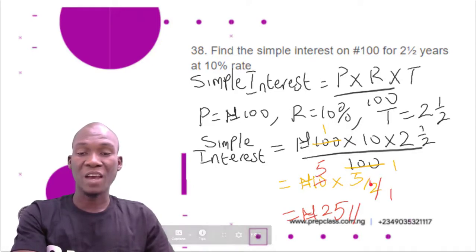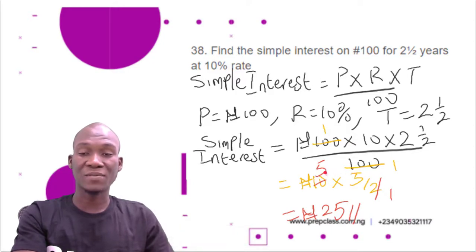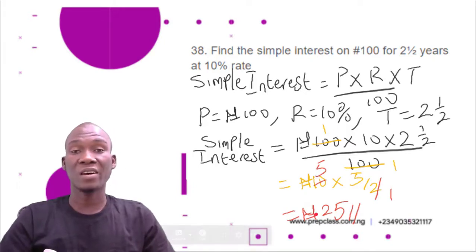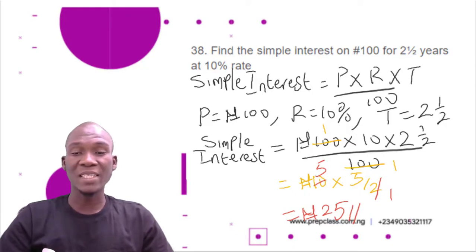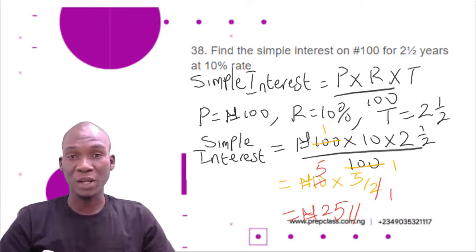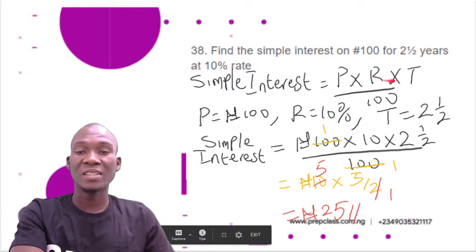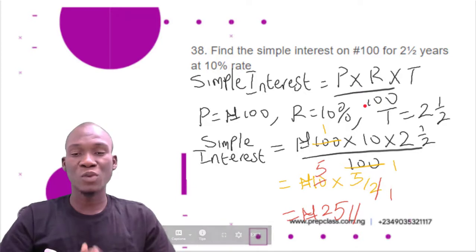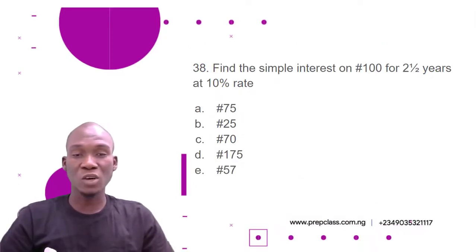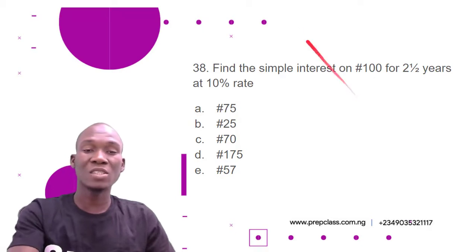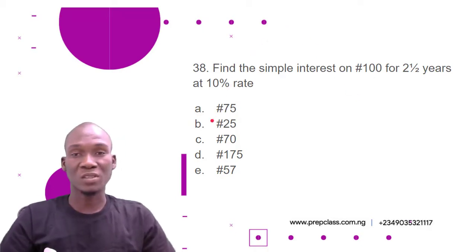2.5 expressed as a fraction is 5/2. So we have 10 × 5/2. Dividing 2 into 10 gives 5, then 5 × 5 = 25. The simple interest is 25 naira. The formula is Principal × Rate × Time ÷ 100, and the correct option is B, 25 naira.